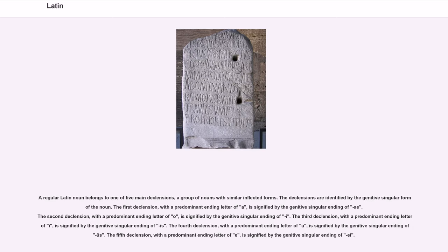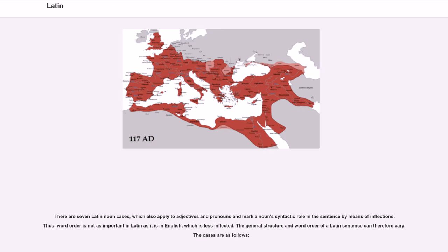A regular Latin noun belongs to one of five main declensions, a group of nouns with similar inflected forms. The declensions are identified by the genitive singular form of the noun. The first declension, with a predominant ending letter of A, is signified by the genitive singular ending of A. The second declension, with O, is signified by genitive singular I. The third declension, with I, is signified by genitive singular IS. The fourth declension, with U, is signified by genitive singular US. The fifth declension, with E, is signified by genitive singular EI. There are seven Latin noun cases, which also apply to adjectives and pronouns and mark a noun's syntactic role in the sentence by means of inflections. Thus, word order is not as important in Latin as it is in English, which is less inflected.